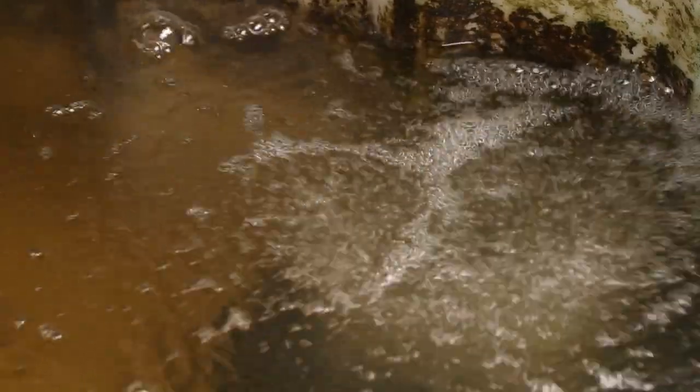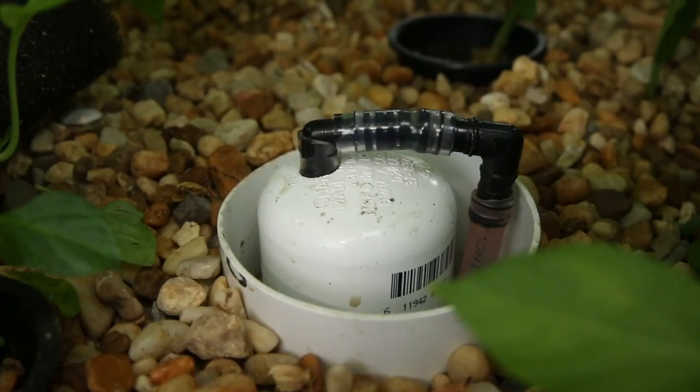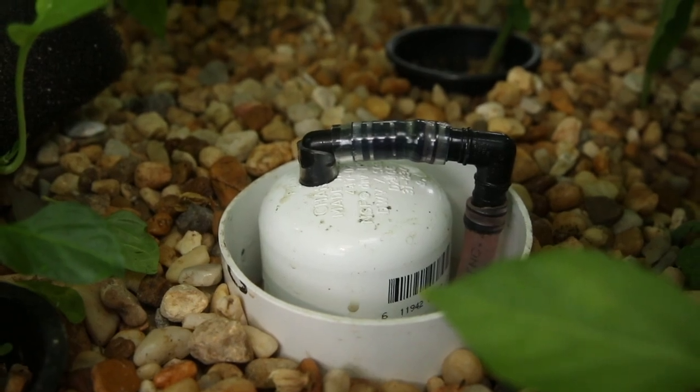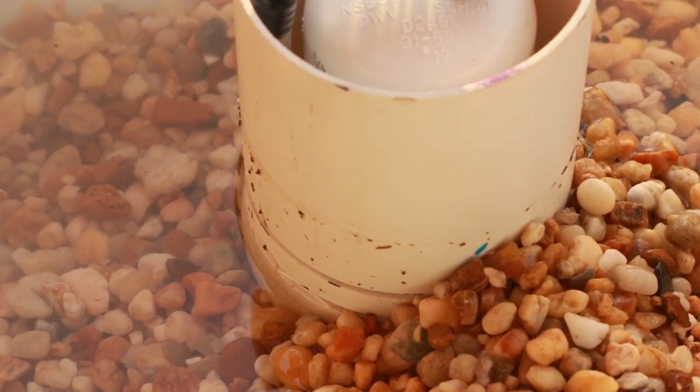Recycling the water is a critical component of nearly all aquaponic systems. This system depends on a pump and plumbing fittings to move the water from the fish tank up to the plant grow bed. And the bell siphon and gravity control how the water gets back to the fish tank.